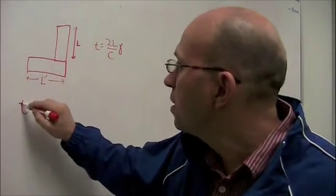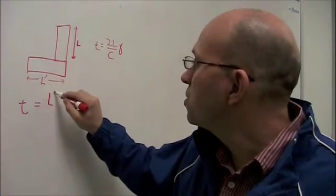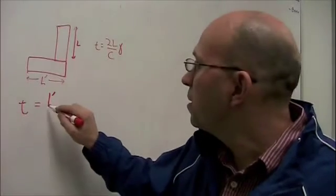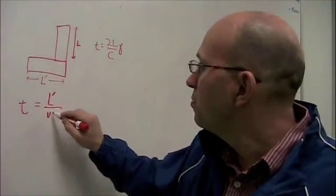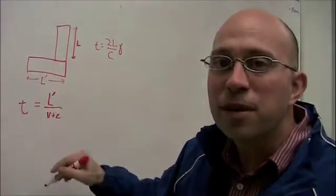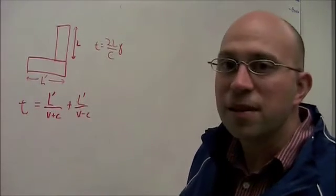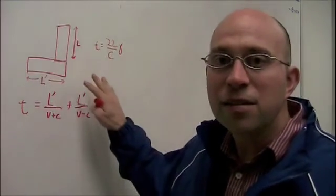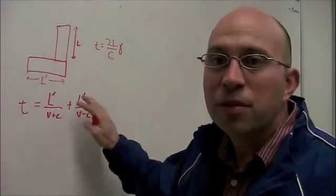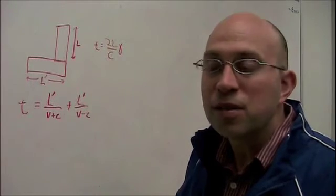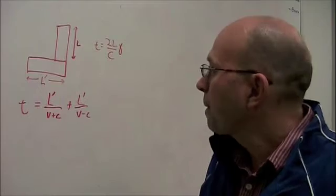Now the time required to do a round trip bounce in the moving frame is equal to, well in one direction, the light has to travel L prime at a relative velocity of the light and the clock of V plus C. And then on the return trip it has to travel the same distance at a relative velocity of V minus C. Okay? This is not in the clock's frame. This is in your frame. Light is traveling at C with respect to you but the clock is traveling at V with respect to you. So that's why we have these relative velocities.